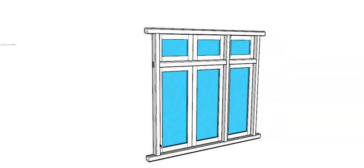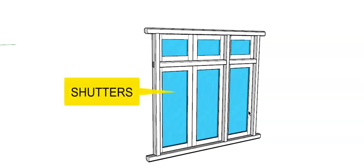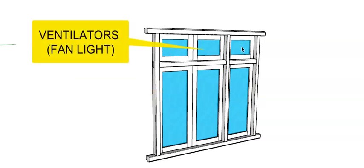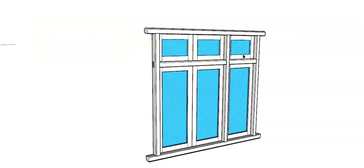The window consists of three openable shutters, and at the top there are ventilators which can open upwards — these are also called fan lights. The number and arrangement of shutters can change depending on the dimensions and type of window selected.